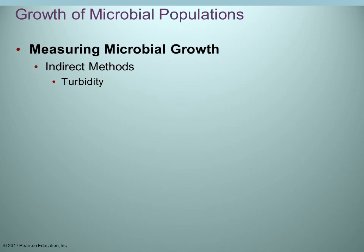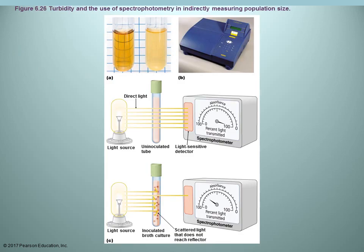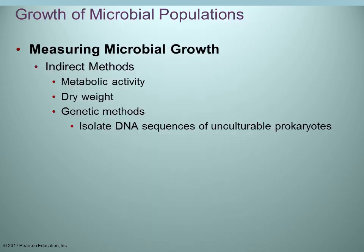For indirect methods of measuring microbial growth, probably the most common is turbidity — cloudiness. A non-inoculated tube is clear; bacteria growing in it make it cloudy or turbid. A spectrophotometer sends a light wave through the tube and measures it: in a clear tube the light passes through completely, but in a turbid tube the light bounces off bacteria so less light is transmitted. You can measure this absorbance and correlate it back to the number of bacteria. You first calibrate by doing plate counts, then subsequently just read the absorbance. Other indirect methods include metabolic activity, dry weight, and genetic methods — isolating DNA from a sample even when the organism cannot be grown in the lab.